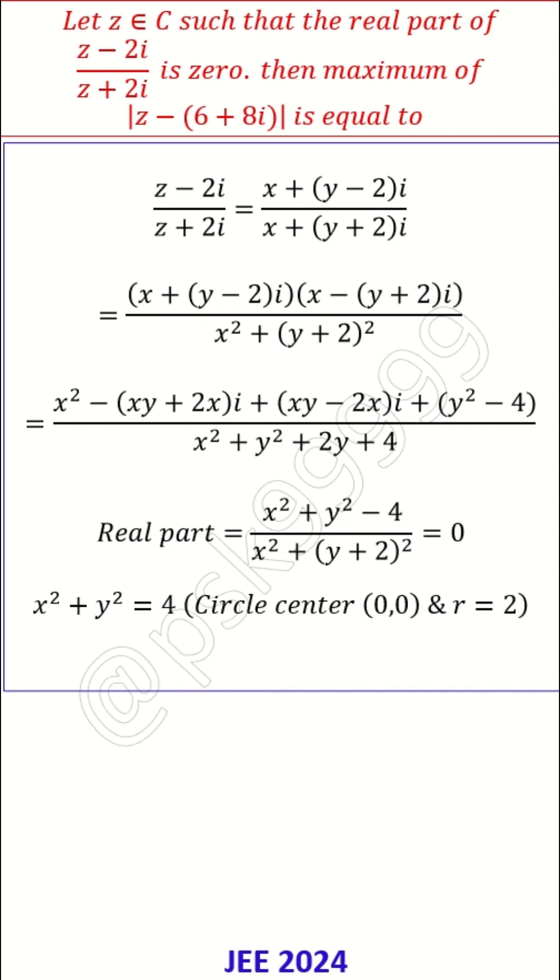Now this is your z. What is |z-(6+8i)|? This is nothing but (x-6)² + (y-8)², which equals some r². Basically you can call it some r or r². Now what we are looking at is the maximum value of this r². What can be the maximum value?